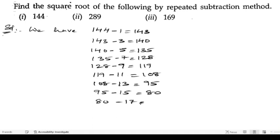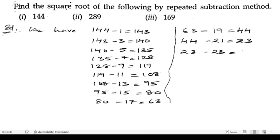Now let us write here 64. So 63 minus 19 which gives us 44. 44 minus 21, that equals 23. So 23 minus next odd number is 23. So 23 minus 23 is 0.